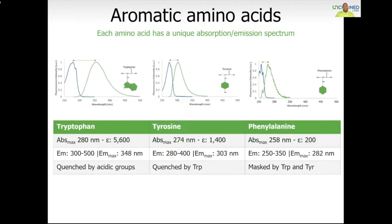More than their relative strength as fluorophores, each amino acid has a unique absorption and emission profile. Tryptophan typically absorbs at 280 nm and emits from 300 to 500 nm. Tyrosine typically absorbs at about 274 nm and emits from 280 up to 400 nm. Phenylalanine absorbs at about 258 nm optimally and typically emits from 250 to about 350 nm. The combined emission of each amino acid results in the emission spectra of the protein. Furthermore, each amino acid can be quenched — its emission signal can be abated by special groups or neighboring aromatic amino acids.